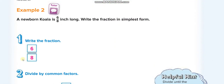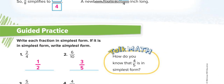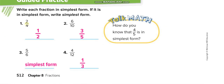For 6 over 8: divide by 2 up and down — 6 divided by 2 is 3, 8 divided by 2 is 4, so 3 over 4. That's the simplest form. For 2 over 4: divide 2 up and 2 down. For 6 over 10: divide 2 up and 2 down. For 5 over 6: there is no number you can divide both by, so 5 over 6 is already in simplest form.